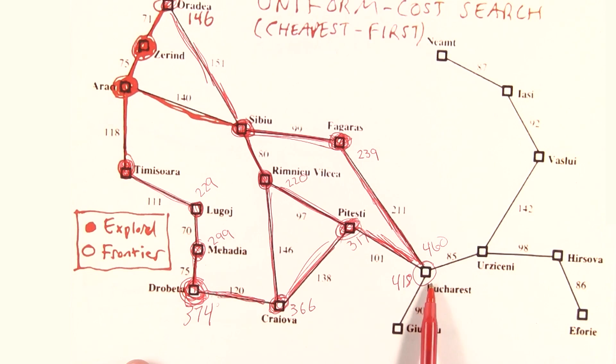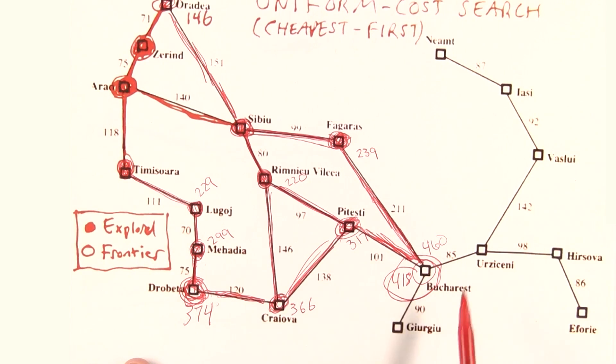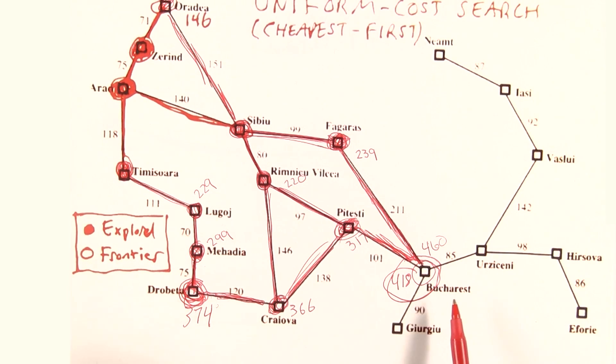And now, finally, the cheapest path on the frontier is this 418 path to Bucharest. So we pop that off, and now we reach the goal, and now we stop.